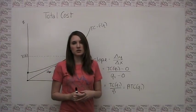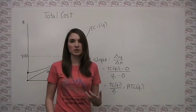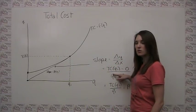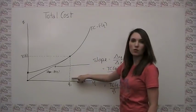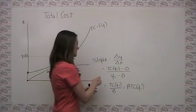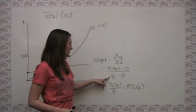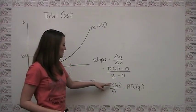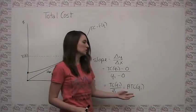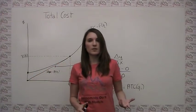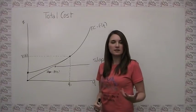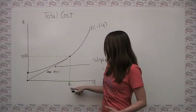The slope of a line is just rise over run, or change in Y over change in X. So in this example, our slope is the total cost of producing Q1 minus zero divided by Q1 minus zero — which is just total cost divided by quantity. And we said before that average total cost was just total cost divided by quantity. So the slope of this line we constructed is in fact equal to the average total cost of producing this many units.